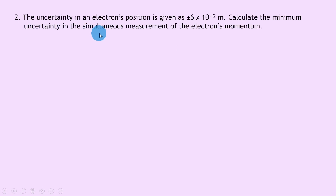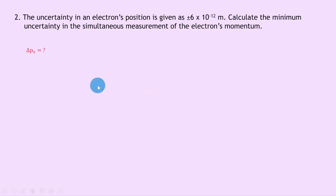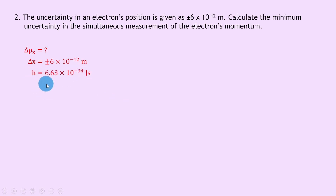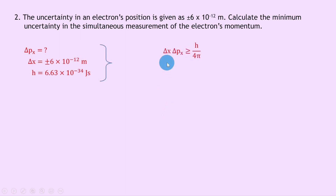Question 2 says the uncertainty in an electron's position is given as plus or minus 6 times 10 to the minus 12 meters. Calculate the minimum uncertainty in the simultaneous measurement of the electron's momentum. Writing down what we know: we're trying to find the uncertainty in the momentum in the x direction. The uncertainty in position x is plus or minus 6 times 10 to the minus 12 meters, and Planck's constant h is 6.63 times 10 to the minus 34 joule seconds. Writing down the equation for the uncertainty principle: delta x times delta px is greater than or equal to h over 4 pi.